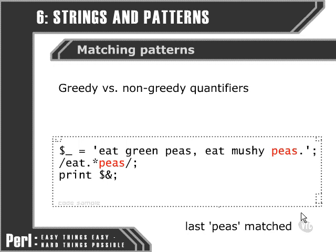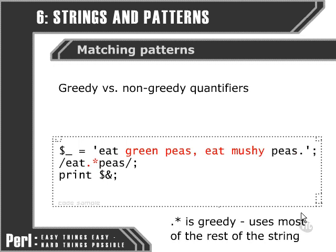Now this seems a little perverse, but what's actually happening here is that Perl's quantifiers are, by default, very greedy. So they want to take up as much of our string as they possibly can. In this case, Perl is going to match everything else between the first 'eat' and the last 'peas' as matching up with our dot asterisk.